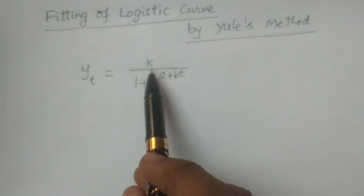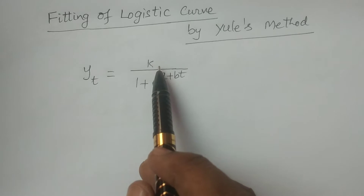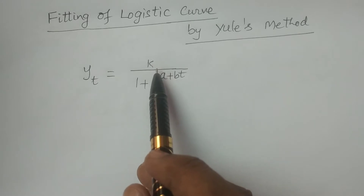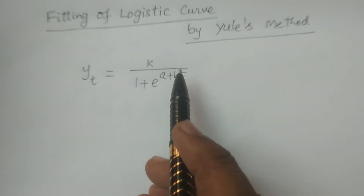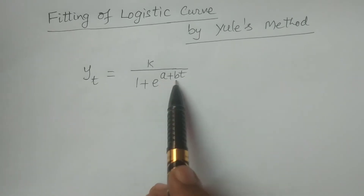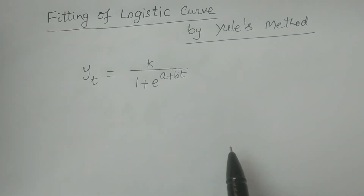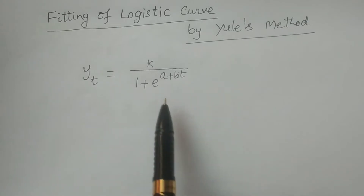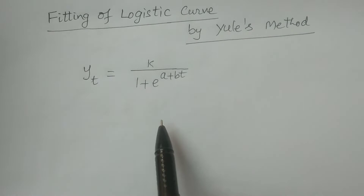You see here, if k is a known value obtained by any one of the methods, then only two parameters are required — a and b — which are going to be calculated. It is required to calculate only two parameters, a and b, if k is a known value obtained by any one of the methods.